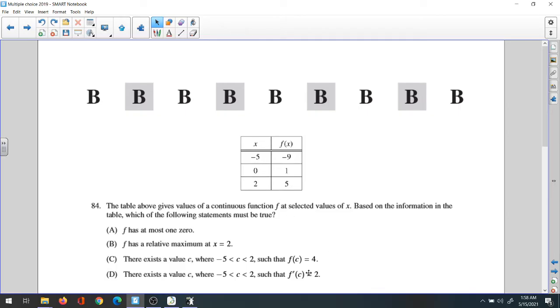But the intermediate value theorem is not applicable for this case. So option C: there exists a value c where negative 5, we'll see between negative 5 and 2, that f of c equals 0, is the correct answer.